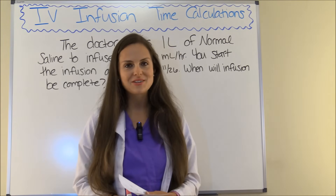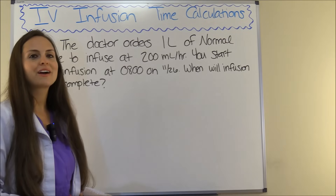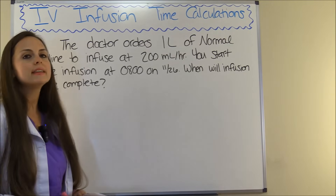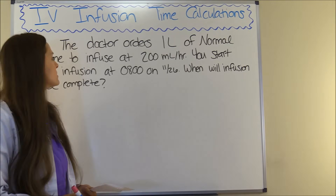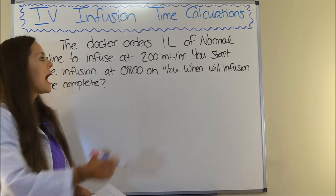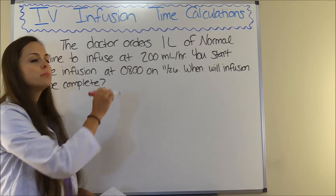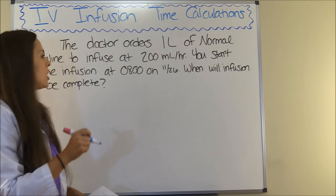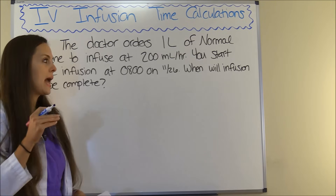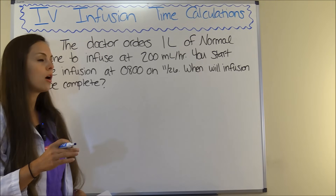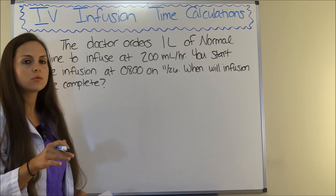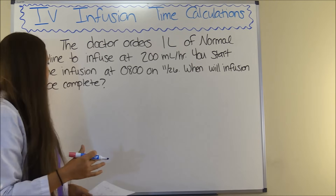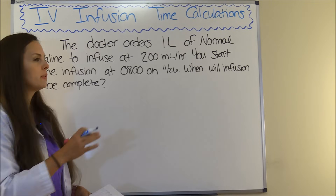So let's get started. Our first problem says the doctor orders one liter of normal saline to infuse at 200 milliliters per hour. You start the infusion at 8 o'clock on 11-26, so November 26. When will the infusion be complete?